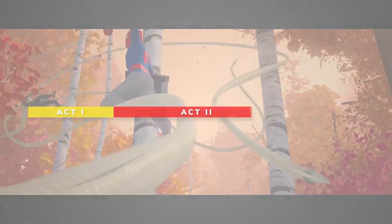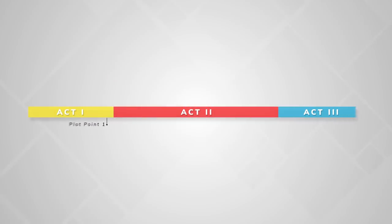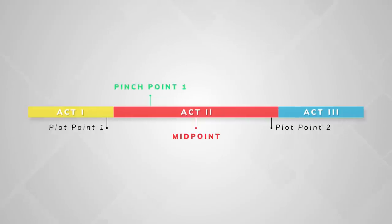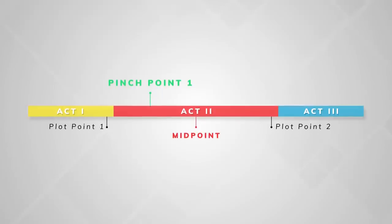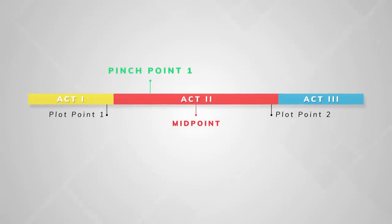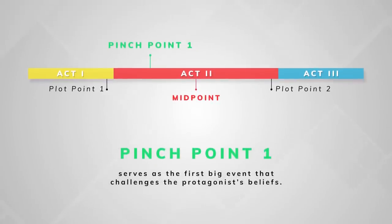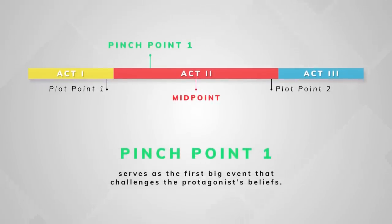In the past, I've talked about midpoints and how they can be used to turn the story in a meaningful way. Pinch points not only work similarly, but can be used to complement a midpoint in order to create a series of increasing belief-changing events. Usually, stories have two pinch points. The first pinch point happens in between the first plot point and the midpoint — in other words, one quarter into the second act. The first pinch point serves as the first big event that challenges the protagonist's beliefs.